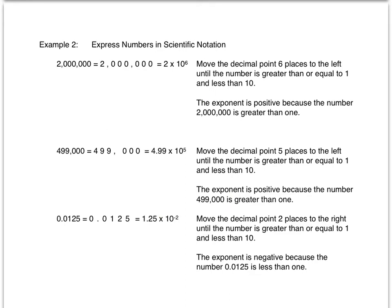In example two, we'll express numbers in scientific notation. We'll start in standard form and switch it to scientific notation. The number two million has an assumed decimal point at the end of the number. We'll move the decimal point six places until we get a number that is greater than or equal to one and less than ten. The number two satisfies that condition, so it will be 2 times 10 to the sixth power because we moved our decimal point six places to the left. The exponent is positive because two million is greater than one.